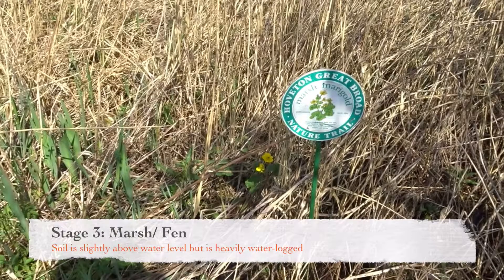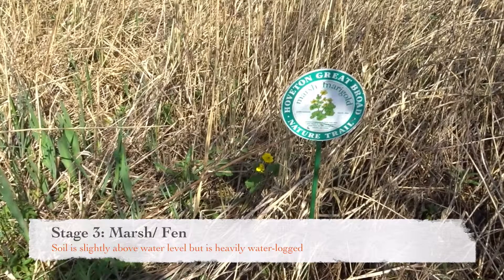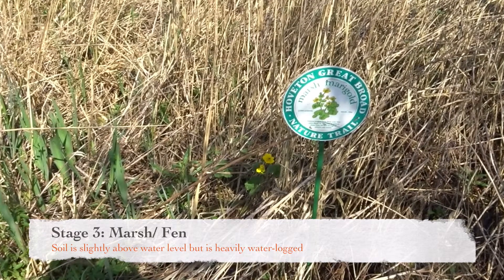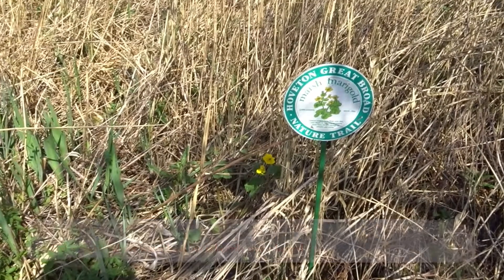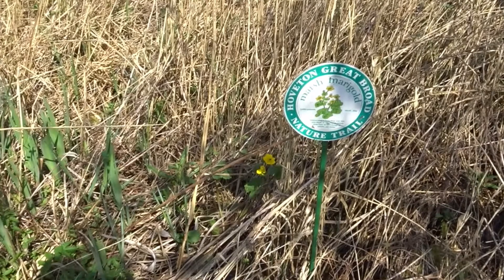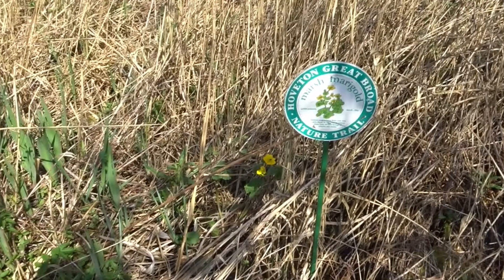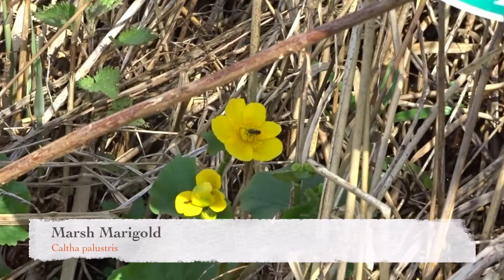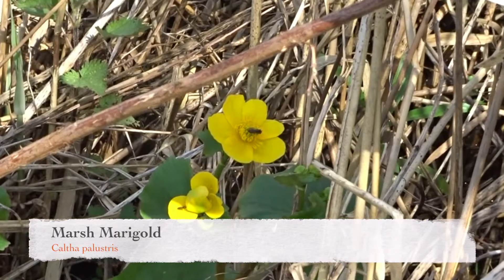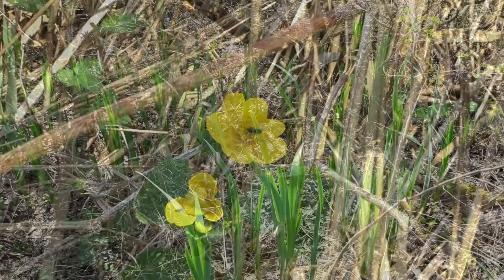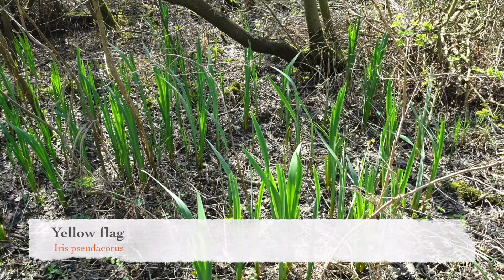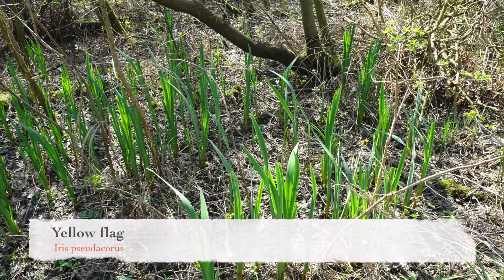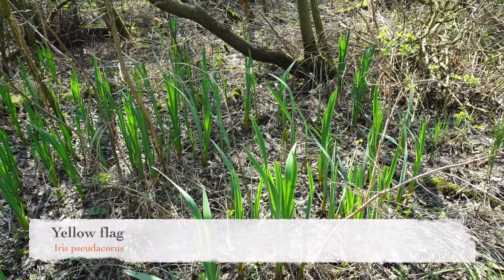Stage 3: Marsh or Fen. Now the soil is at surface level but is still heavily waterlogged. We start to see flowering plants that thrive in these conditions, like marsh marigold and yellow flag. This habitat supports a variety of insects, which in turn supports other animals such as birds.